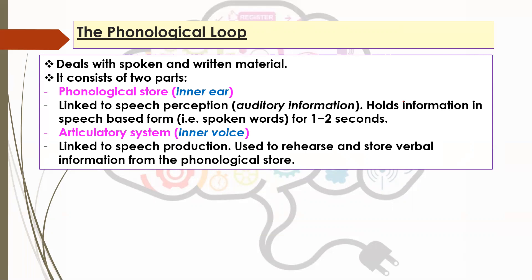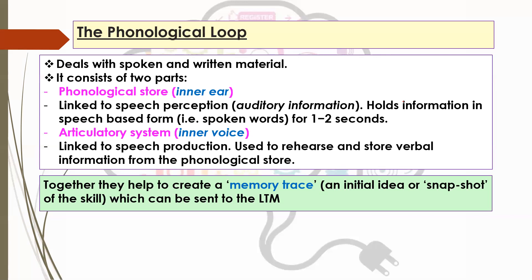Initially you hear that information; it goes into the inner ear, the inner ear recognises it needs help remembering, and then the rehearsal and storage takes place in the phonological store. Together they help to create something called a memory trace — essentially an initial idea or snapshot of the skill. That memory trace can then be sent on to the long-term memory. So it's the initial idea or concept of what's going on: you've taken on board the information, heard it, processed it in the phonological loop, and then it's sent back to the central executive to move on to the long-term memory.